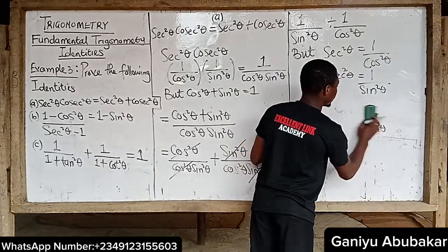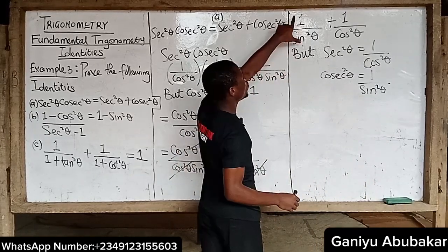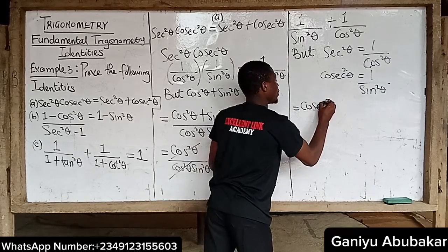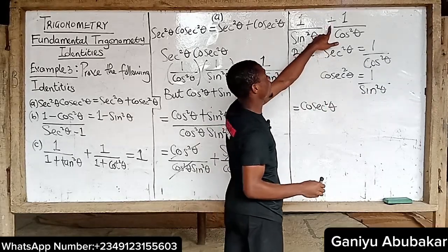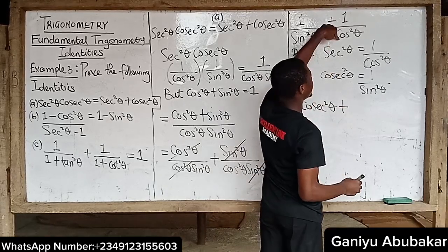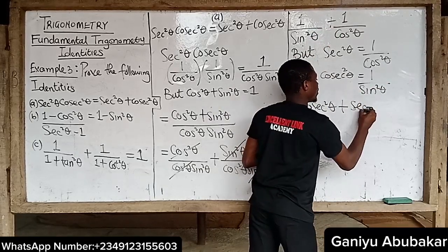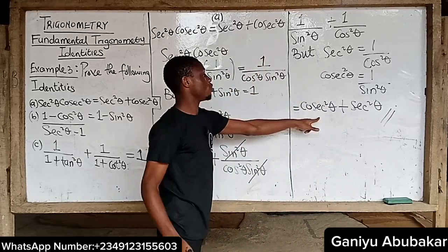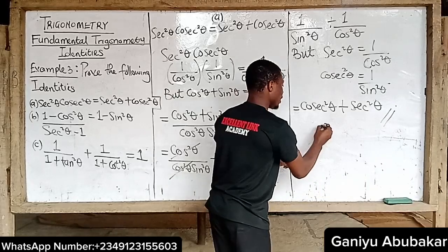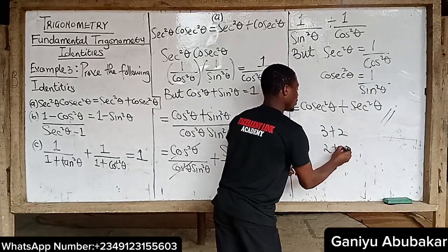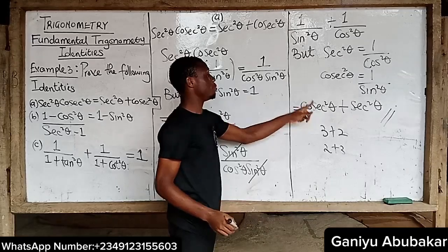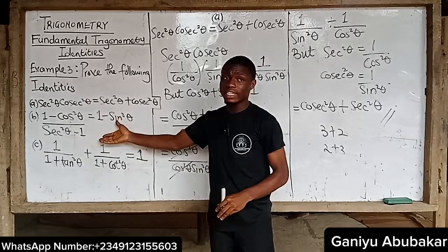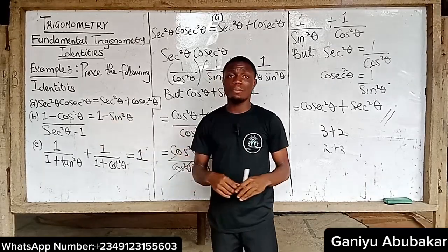So our result is cosec squared theta plus sec squared theta. In respect of order, sec squared theta plus cosec squared theta is the same as cosec squared theta plus sec squared theta — that's the same thing. So we have proved this identity. In our next class we'll try to solve question B.